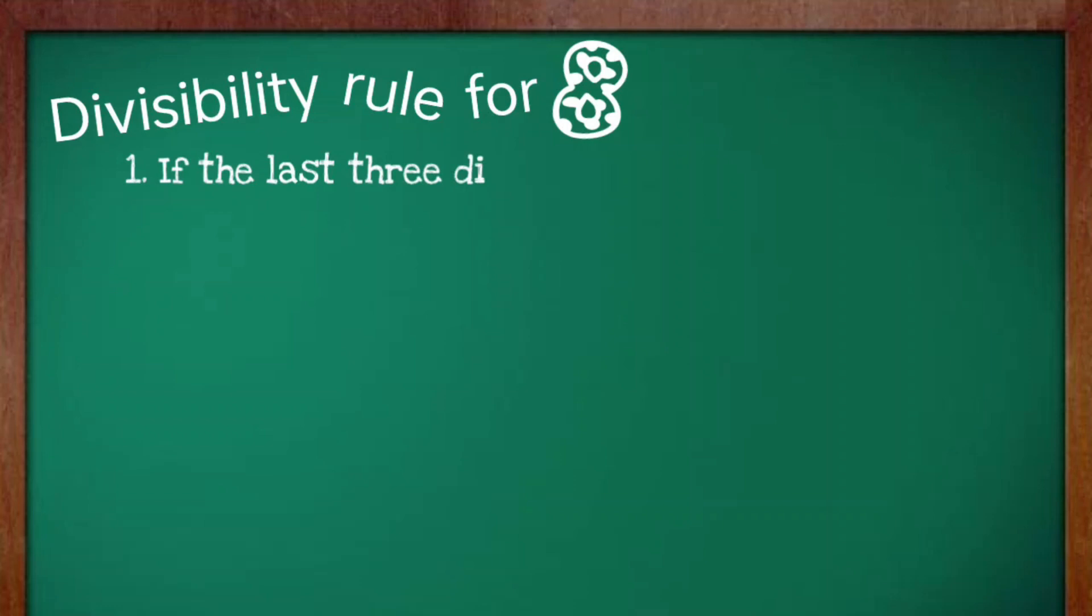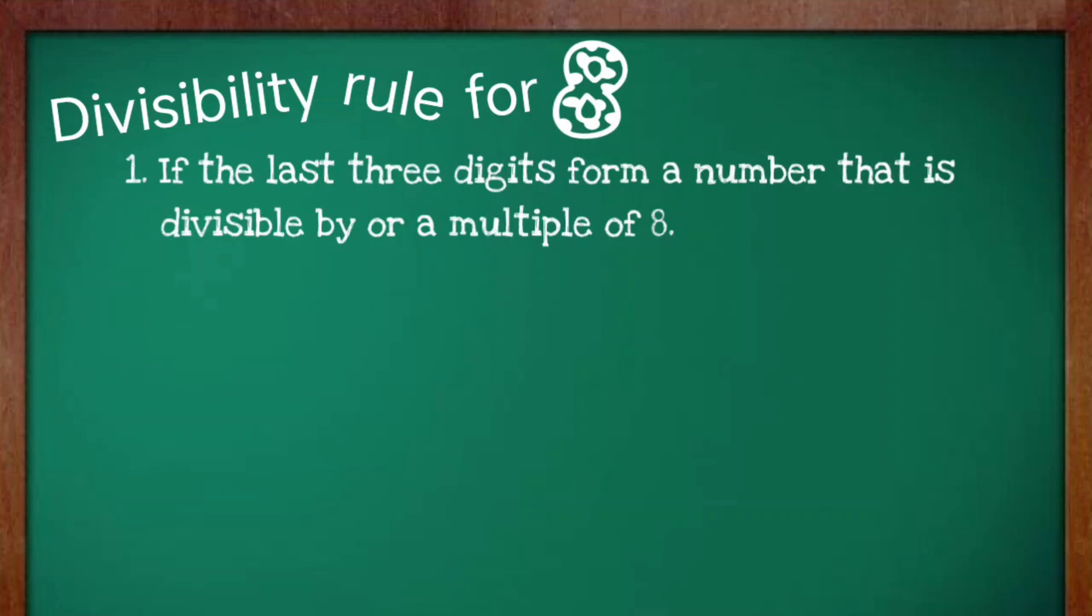Now, let's take a look at the divisibility rule for 8. First, if the last three digits form a number that is divisible by or a multiple of 8. Also, if a number ends with three zeros.